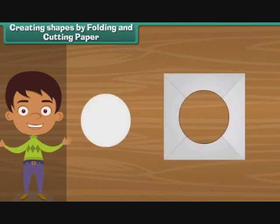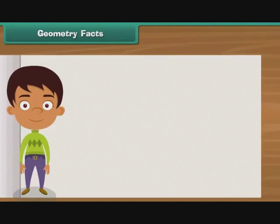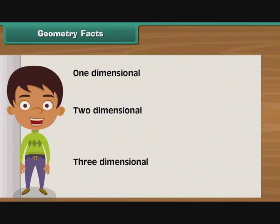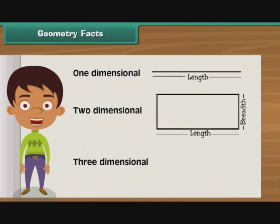Geometry facts. The geometry facts are generally declaring three parts: one dimensional, two dimensional, and three dimensional. The one dimensional geometry facts is called the line. The lines have only length. The two dimensional geometry facts is about length and breadth. The three dimensional geometry facts is about length, breadth, and height.